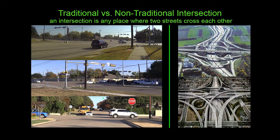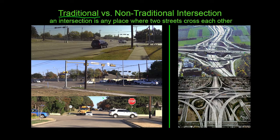We're in this section of the course known as right-of-way, and right-of-way is always a big issue when it comes to intersections. One of the things we need to do is define the difference between a traditional intersection and a non-traditional intersection. I've come to the conclusion that there are only two differences. The pictures on the left are all going to be traditional and the pictures on the right are going to be non-traditional intersections.